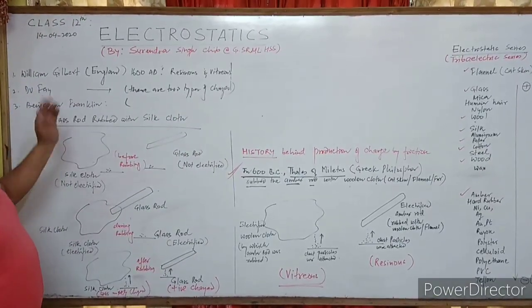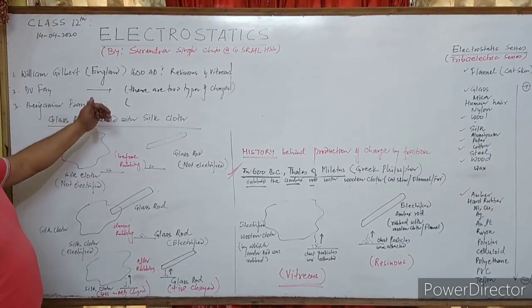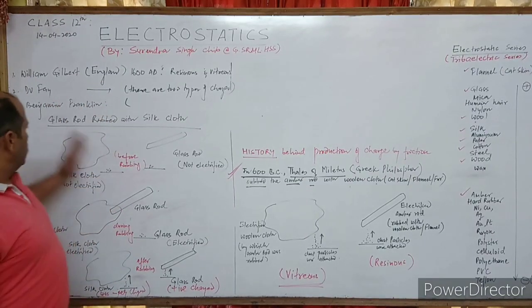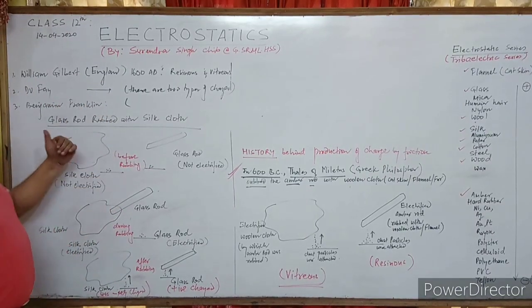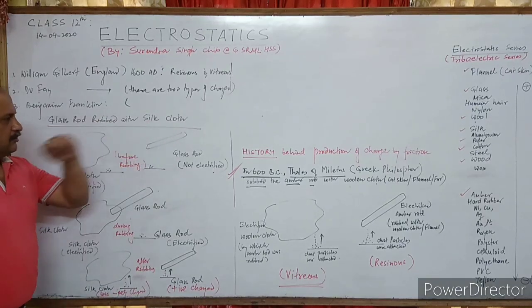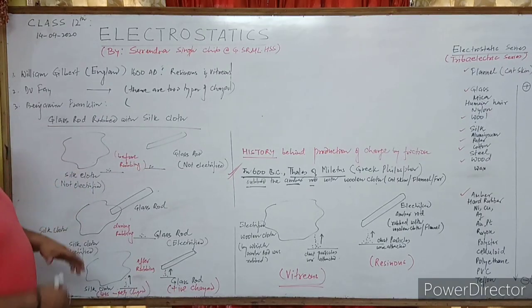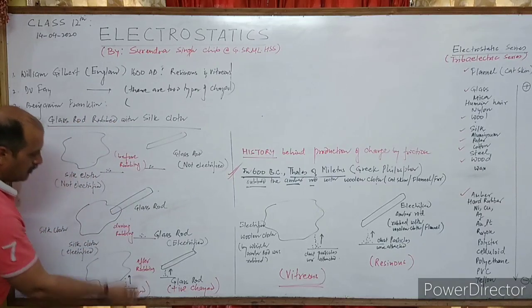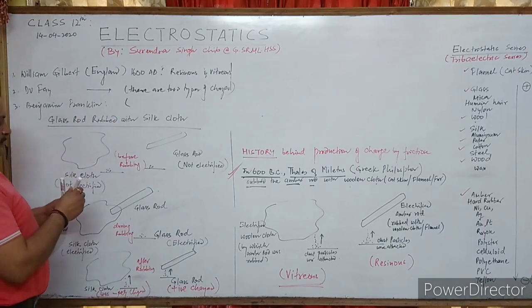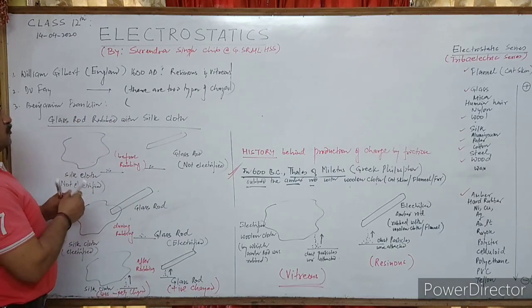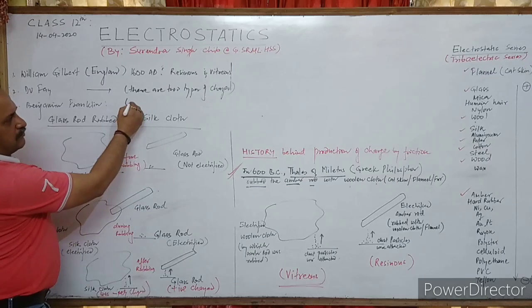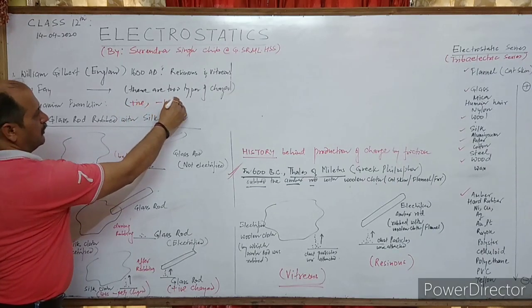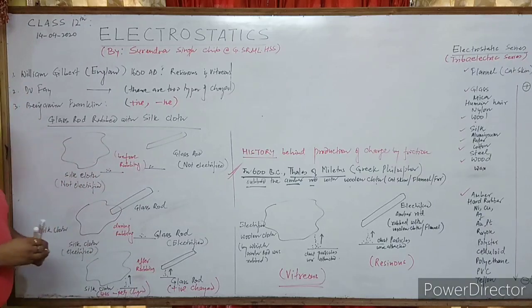Benjamin Franklin, around the 18th century, performed the experiment between a glass rod and a silk cloth, and then gave two charges their names. He gave the name of the two charges as positive and negative.